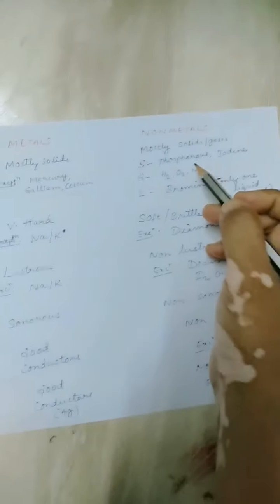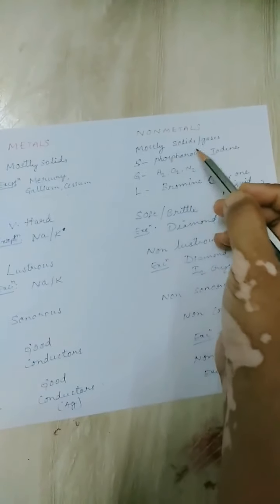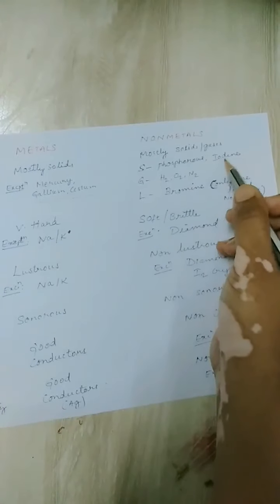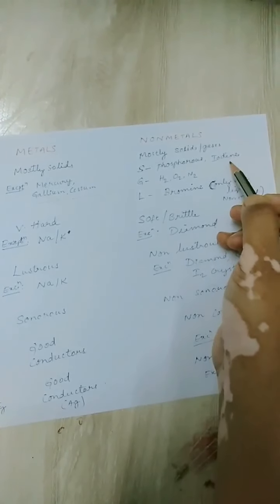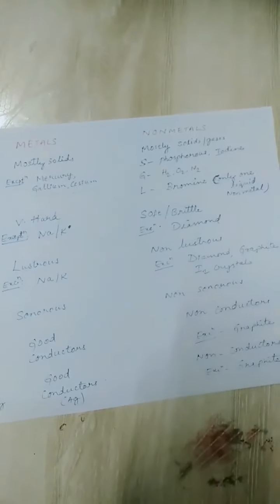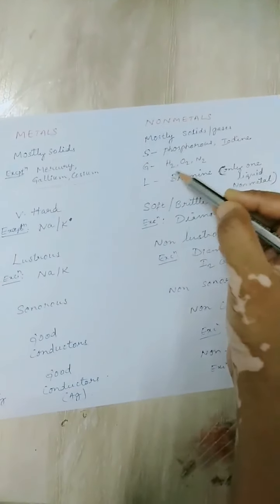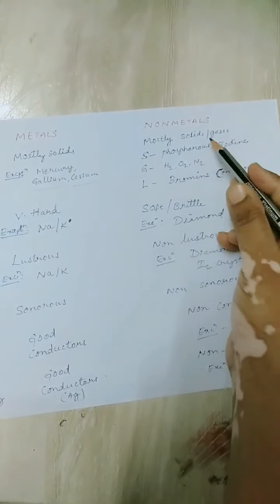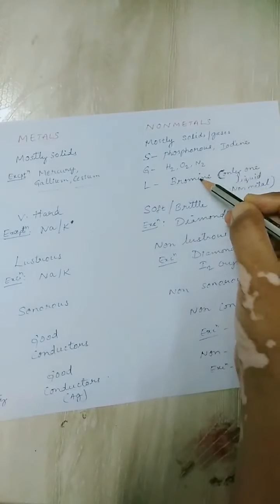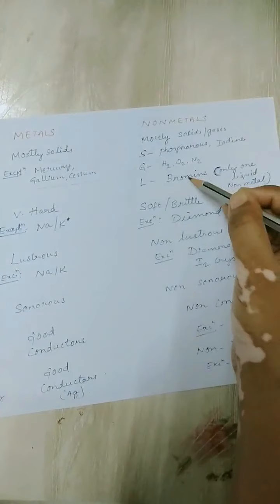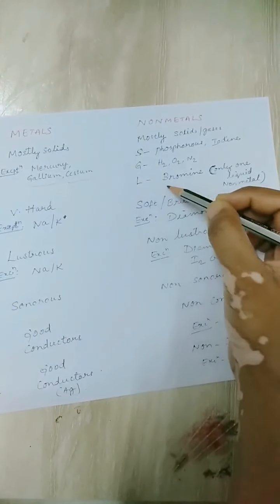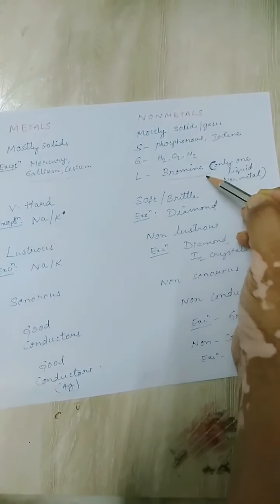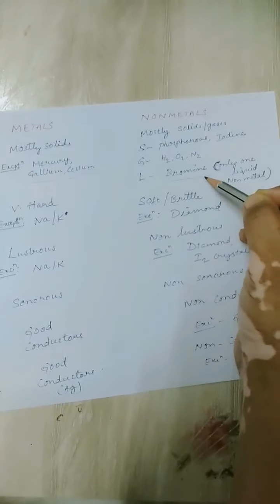Coming to non-metals — they are generally solids and gases. Phosphorus and iodine are examples of solid non-metals. Hydrogen, oxygen, nitrogen, and helium are non-metals which are gaseous in nature. Coming to liquid state, there is only one non-metal which exists as liquid at room temperature, and that is bromine.